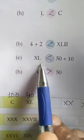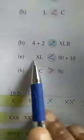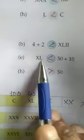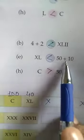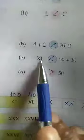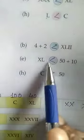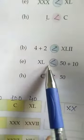Now question number E: XL and 50 plus 10. XL is 40 and 50 plus 10 is equal to 60. So XL is smaller than 50 plus 10, so this sign will come here.